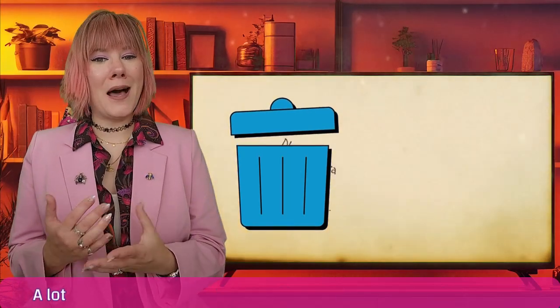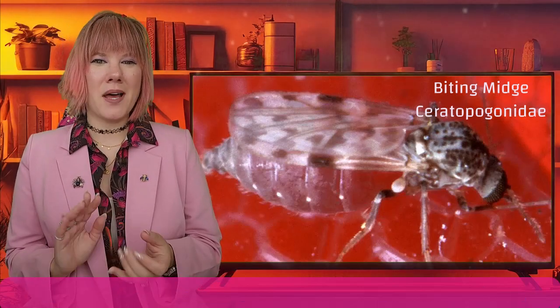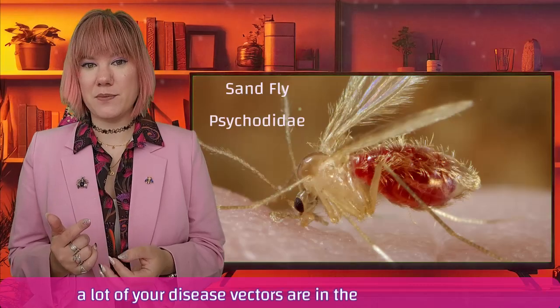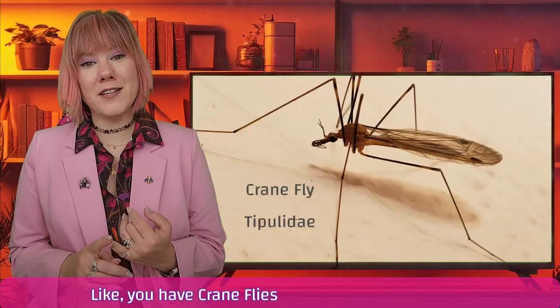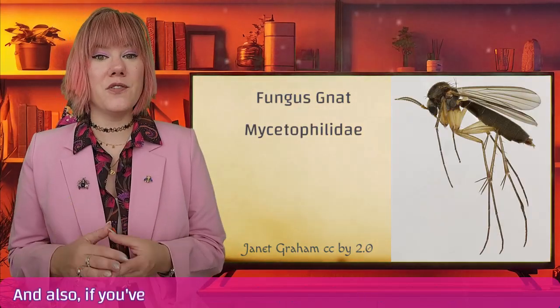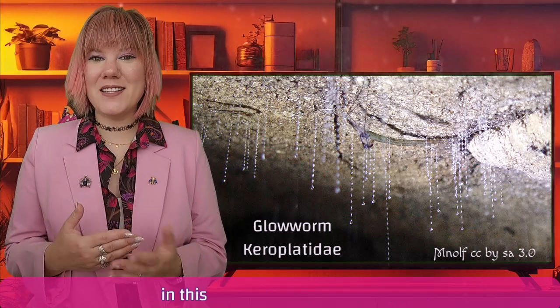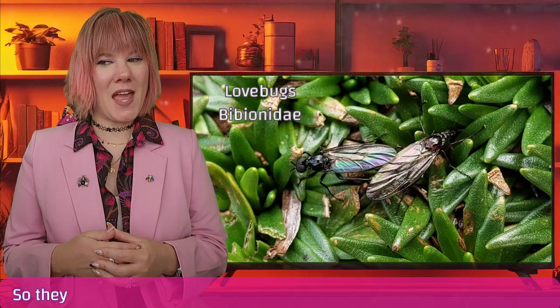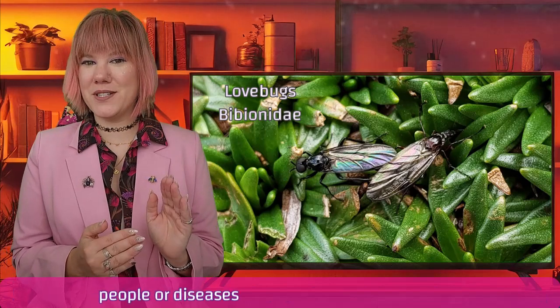What's in here? A lot of your biting flies that you don't like — mosquitoes and midges. A lot of your disease vectors are in this particular group. Not all of the flies in this group are disease vectors; you have a lot of helpful ones as well. Like crane flies, which decompose things, and fungus gnats, which also decompose things. And if you've ever been to the caves in Australia or New Zealand to see the glowworms, they are fly maggots in this group of the Nematocera. So they have a bunch of interesting species that are not tied up to biting people or diseases.